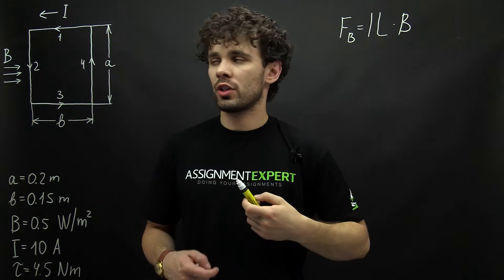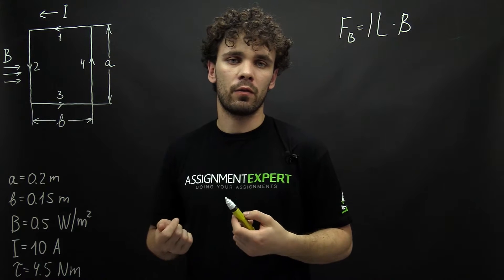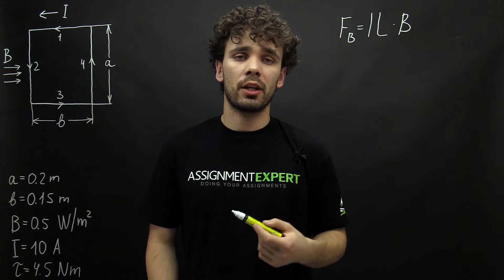L is the vector which is laying in the direction of the current inside of the coil and it is equal to the side of our coil and B is the magnetic field.